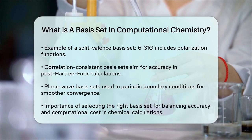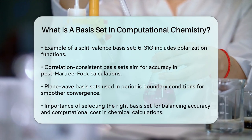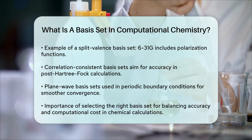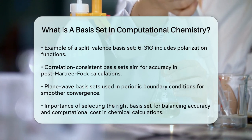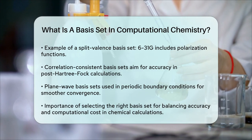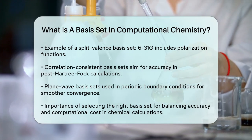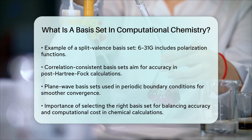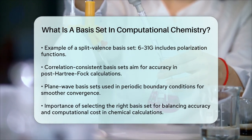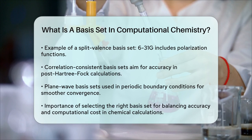In summary, a basis set in computational chemistry is a set of mathematical functions that help describe the electronic structure of molecules. By choosing the right type and size of the basis set, scientists can balance accuracy and computational costs to gain a better understanding of chemical bonding and reactivity. Whether it's Gaussian-type orbitals, Slater-type orbitals, or plane waves, each has its role in making these complex calculations possible.